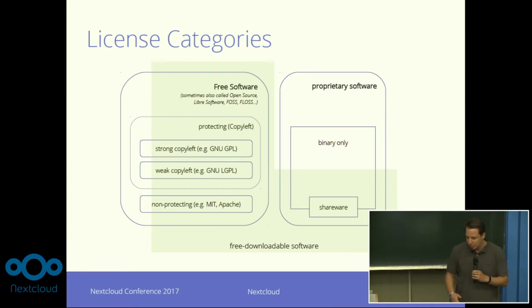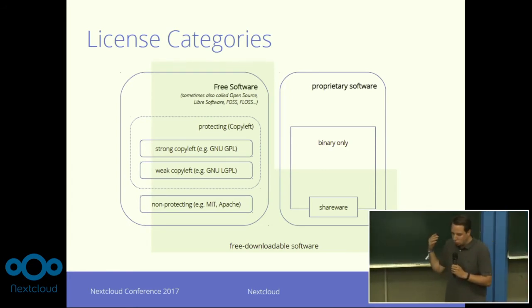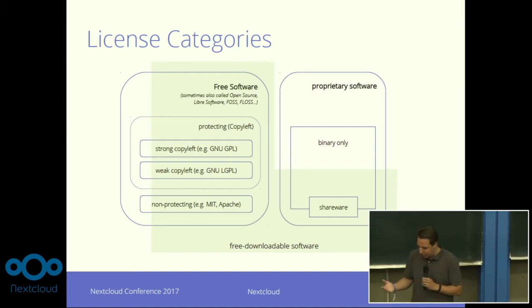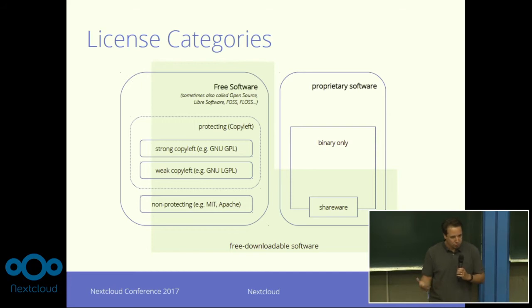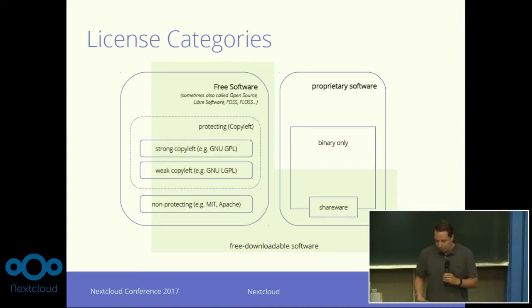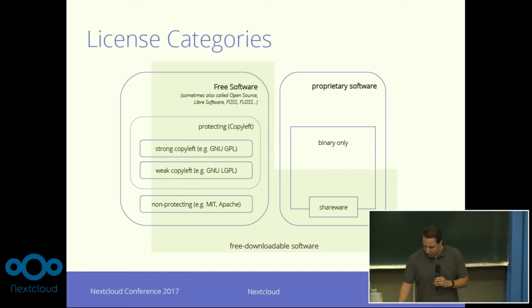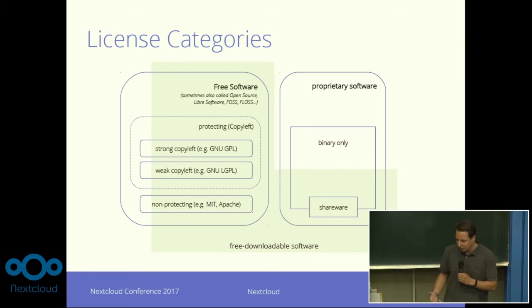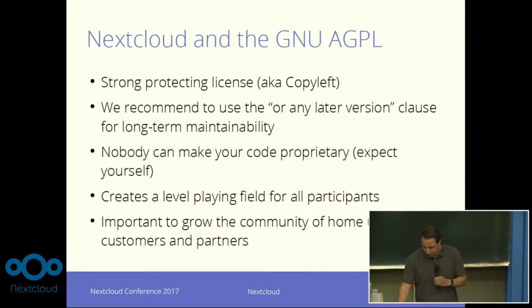So just really quick — if you look at free software and open source licenses, you can break them down into two main categories. One is a copyleft license, which protects your freedom to use, study, share, and improve the software. And the non-protecting license, which gives you exactly the same rights but allows other people to do with them whatever they want. That's really the simplest answer to how different kinds of free software licenses exist.